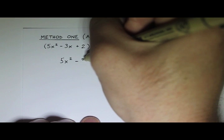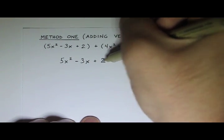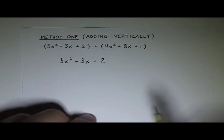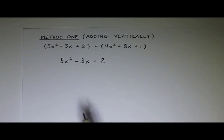So we'll start with the first one. That's 5x squared minus 3x plus 2. And now when you write the second polynomial, you want to write it underneath the first one, and you want to line up the like terms.